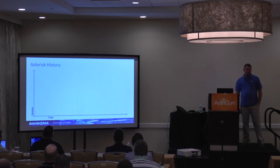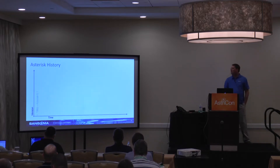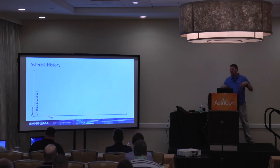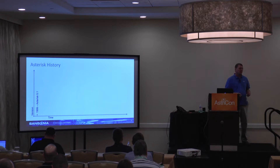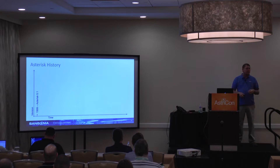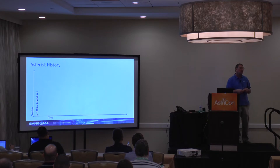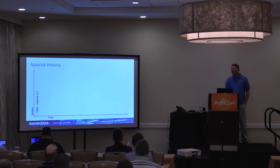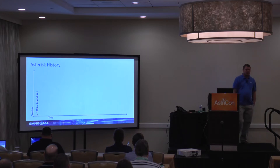Let's go over a little timeline history of Asterisk. Back in 1999, Mark Spencer had a company called Linux Support Services. They were a growing company and had like four telephone lines coming into their office, getting more calls than those four lines could handle. So they decided they needed to go out and buy a real PBX that could do call-queuing functionality. He went out and priced them, but the Panasonics, Nortels, and Lucents were super expensive - he couldn't afford to buy one of these servers.